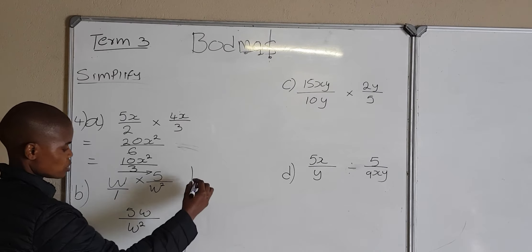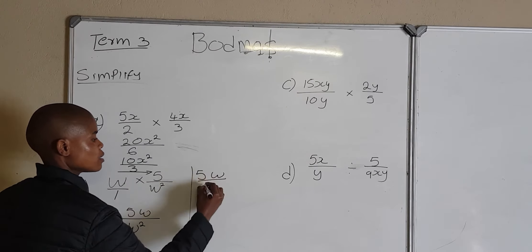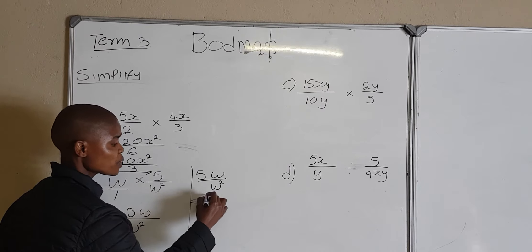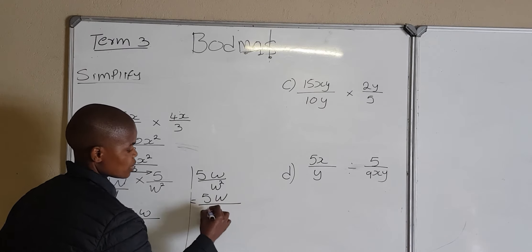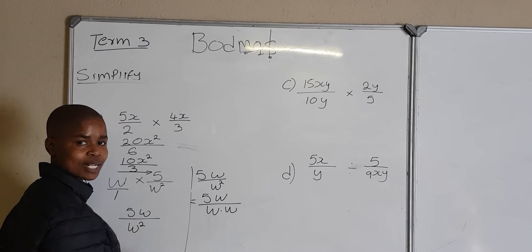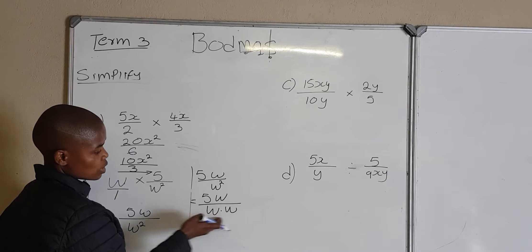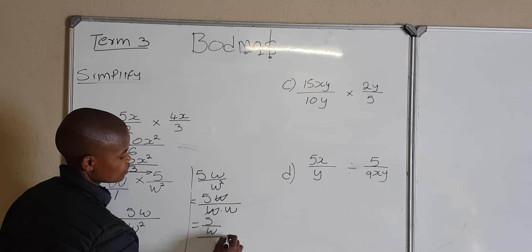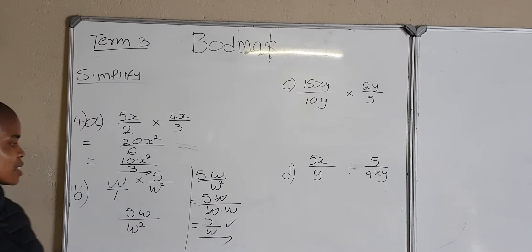Let me rewrite this so that it's easily visible: it's 5w divided by w squared. When we simplify this fraction — w squared is 2 w's multiplied. Since I've got 2 w's as my denominator and 1 w in the numerator, one w divides the other, and I'm left with only 1 w as my denominator. So I have 5 over w, and that is my final answer.